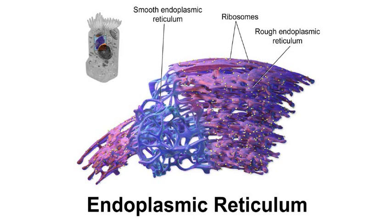The endoplasmic reticulum is composed of two parts. One part is called the rough endoplasmic reticulum, where you can see the yellow points representing ribosomes, where a protein appears from the translation of the messenger RNA. They are located just underneath, suggesting that after synthesis, the protein enters into this rough endoplasmic reticulum for maturation and more.